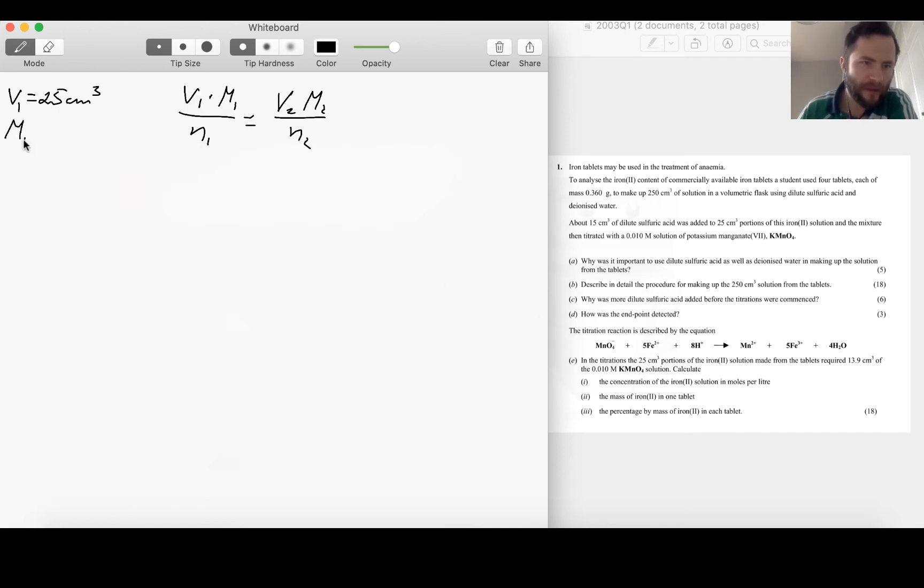Molarity of the solution is something I'm trying to find out, so that's fine. N1 equals question mark, and then number of moles of iron taking part in that reaction is 5, so N1 is equal to 5. V2 is clearly given to be 13.9, then N2 is equal to 1.